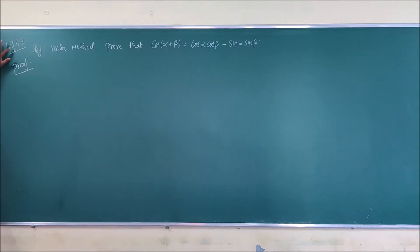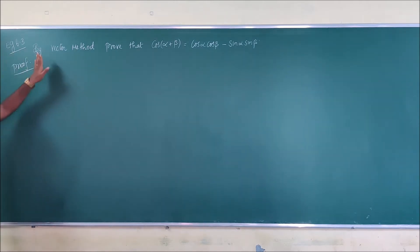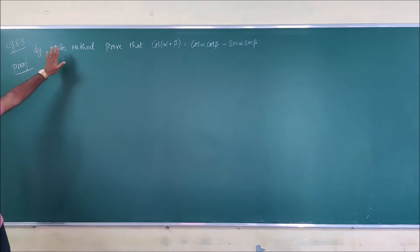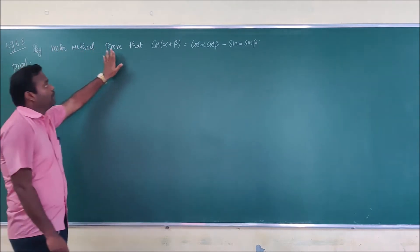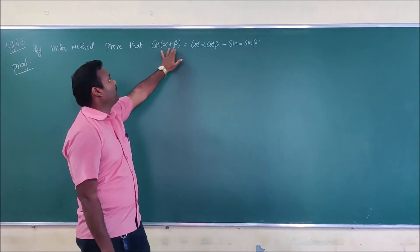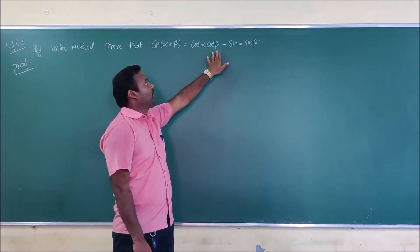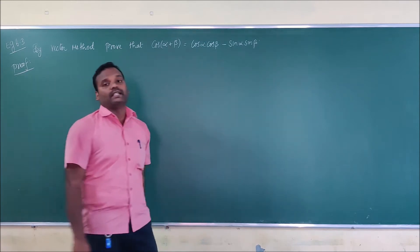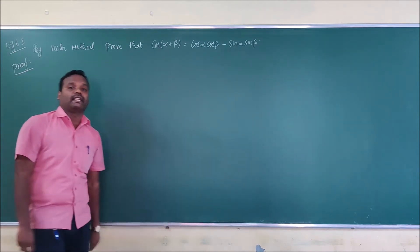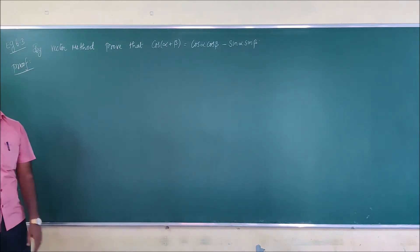Next we are going to see example 6.3. This is also a final exam question, a very important problem. By vector method, prove that cos(α + β) = cosα cosβ - sinα sinβ.